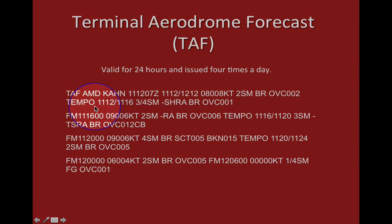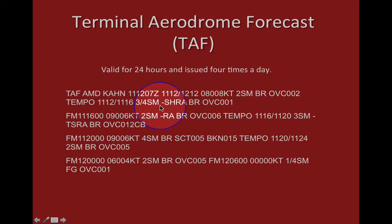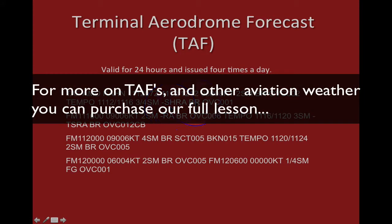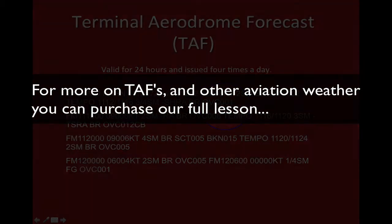Now, TEMPO — what this refers to is 'temporarily.' What it's saying is we expect the weather to behave as described, but temporarily on the 11th day from 12 Zulu to 16 Zulu. So there's a little window they're creating. Temporarily from 12 to 16 Zulu, we expect 3/4 mile visibility, light rain showers, mist, and overcast at 100 feet.